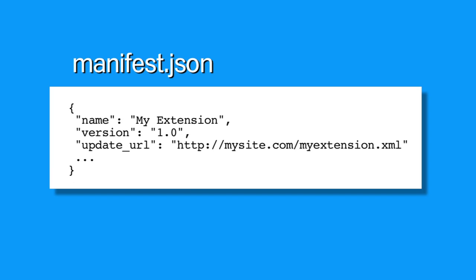The way auto-update works is pretty simple. An extension specifies an auto-update URL in its manifest, and the browser will check that URL every few hours for an XML file, which lists the most recent version of the extension and where to download it. The browser can fetch updated CRX files over a plain, non-SSL connection, because it will check the signature inside the CRX file before installing it.